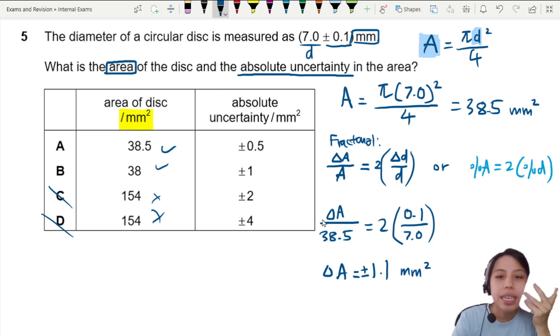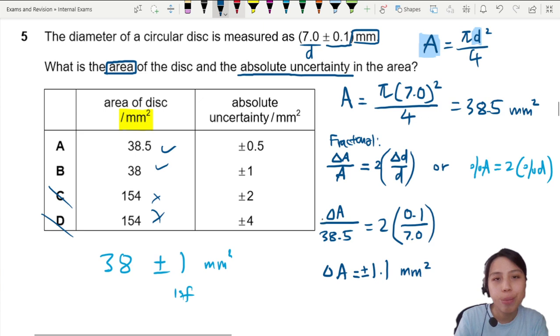But this is 2 significant figures already. For final answer, we only need to write it in 1 SF. So just plus minus 1 millimeter square. This is 1 SF. Then your value, you have to round to follow the same basis. So 38 ± 1. Best choice, B.